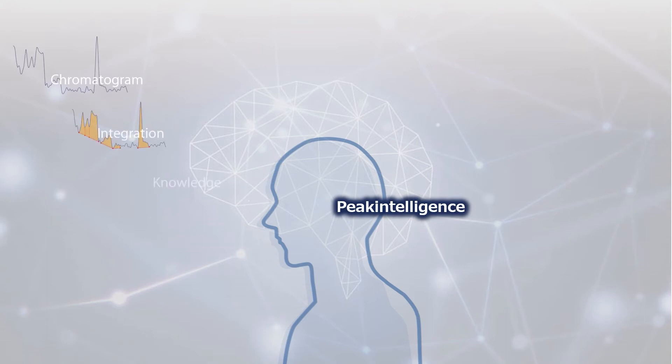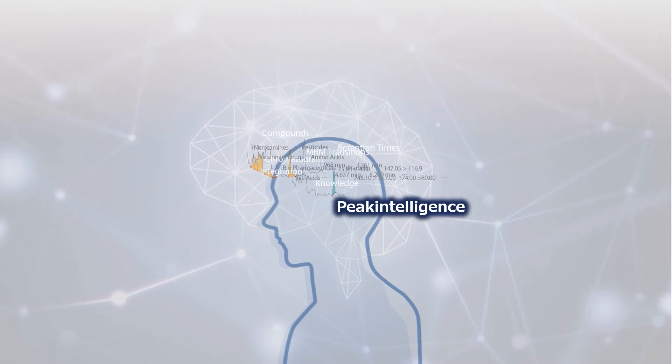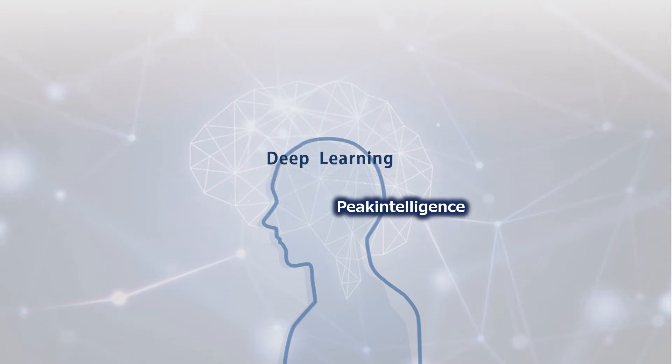Shimadzu Peak Intelligence is an algorithm for peak integration. This was developed by deep learning with thousands of real-world chromatogram data.